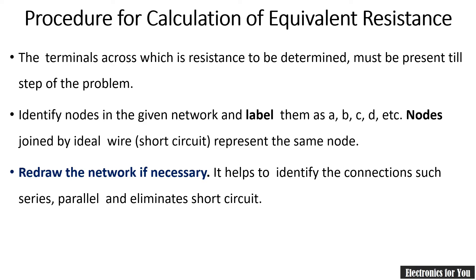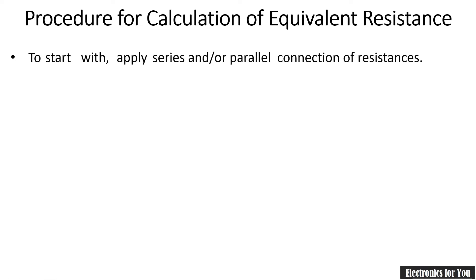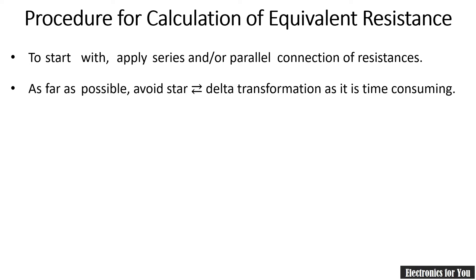The next step is to redraw the circuit whenever necessary. It is not a compulsory step, but it will make our circuit simpler. We will then identify the resistances connected in series and parallel and apply the appropriate formulas. We will mostly avoid star-delta transformation because it is time-consuming and makes the circuit more complex, but if no other option is available, we will use it - this will be covered in later tutorials.